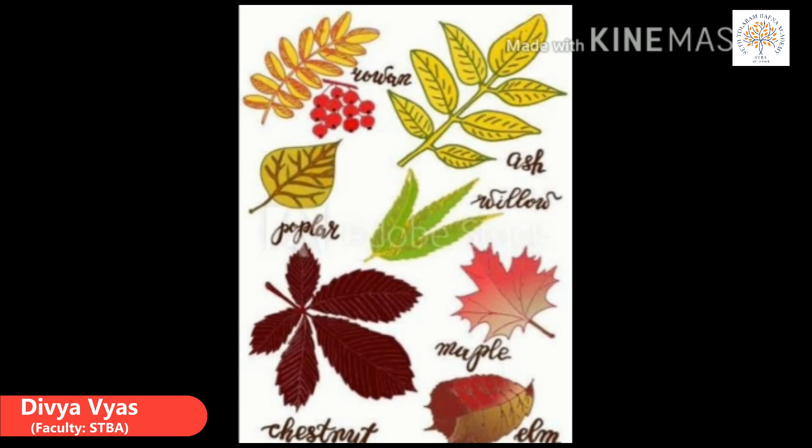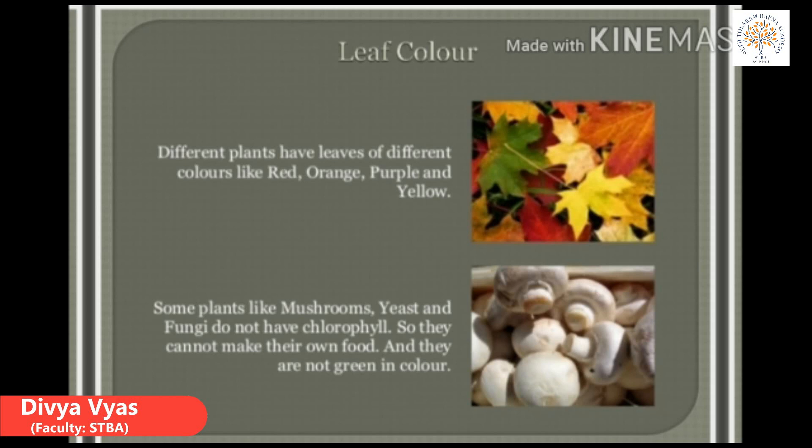But they are all green leaves as they contain a green substance called chlorophyll. Some plants do not have chlorophyll. They are known as non-green plants. For example, mushrooms and yeast. They do not have chlorophyll, so they cannot make their own food and they are not green in color.